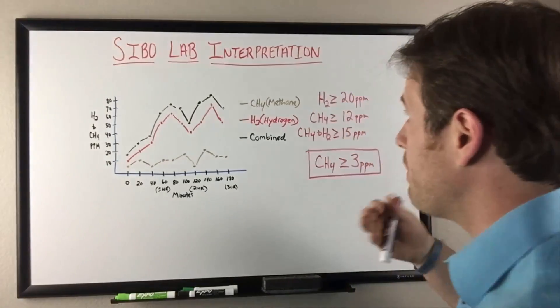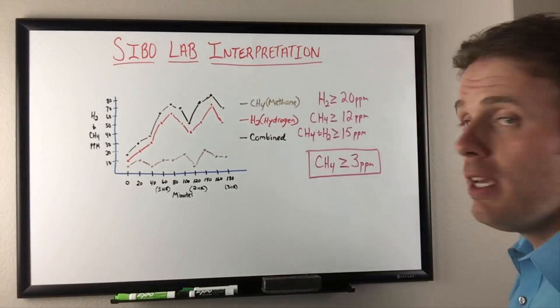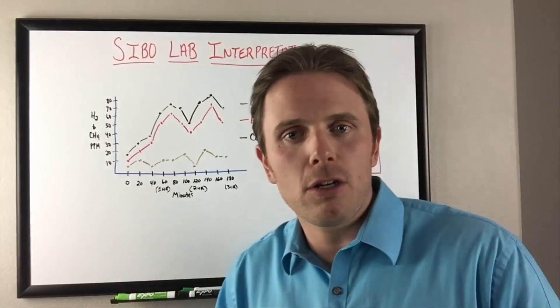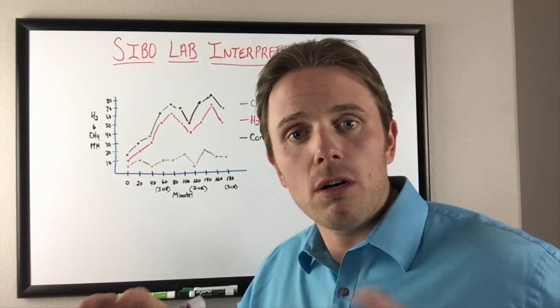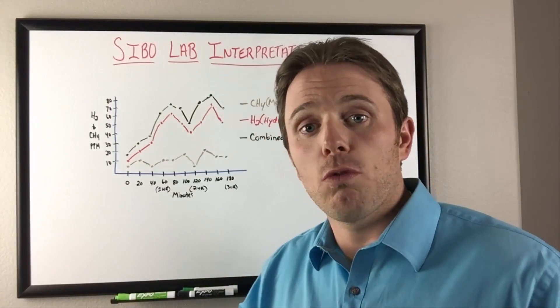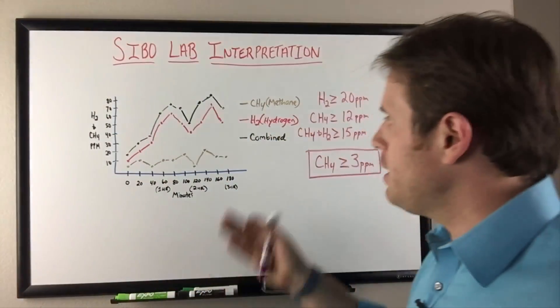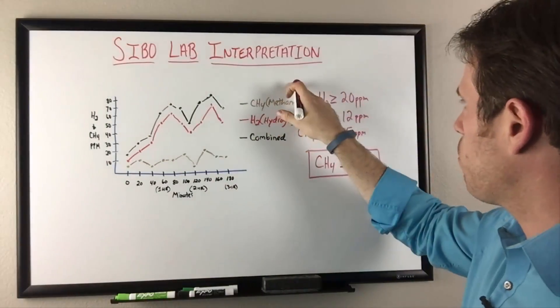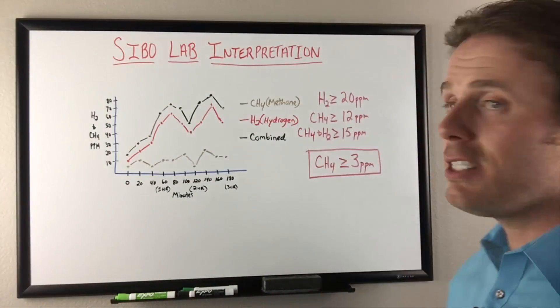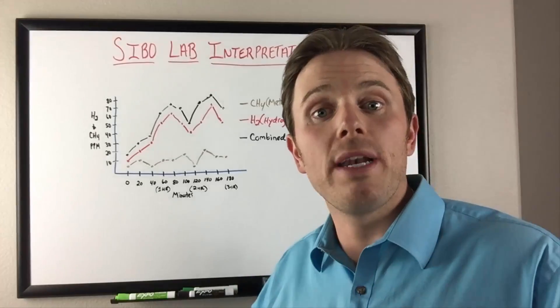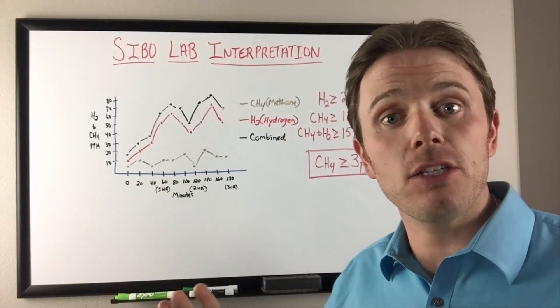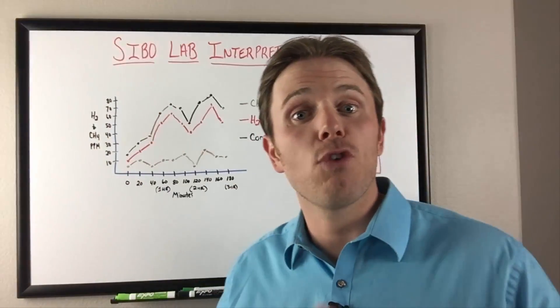Off the bat, we have this lab test interpretation guide here. This came from Alison Seebecker and Dr. Sandberg's article in the naturopathic journal reviews. I'll put the link below. We're looking for hydrogen gases greater than 20, that's from one sample to the next, greater than 20 increase for hydrogen.